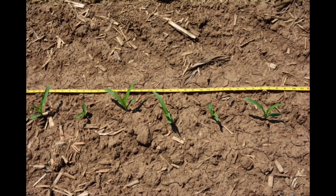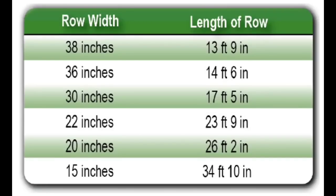To do this, measure out one one-thousandth of an acre and count the established plants. Here's a chart that can be used for various row widths in corn to measure out one one-thousandth of an acre. Do not count plants that are malformed in your plant counts, as they are not likely to contribute to the final yield.